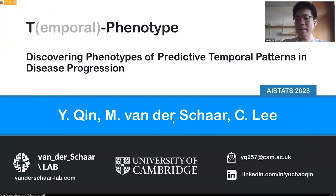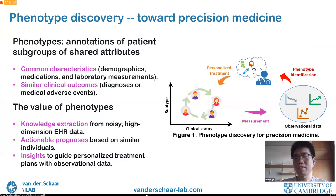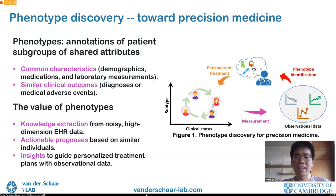Next I'll introduce our latest work on temporal phenotyping to discover predictive temporal patterns, accepted at AI Stats 2023. This is joint work with my supervisor Mihaela van der Schaar and former PhD student Chang-Hin Lee. A first question is: what are phenotypes and why should we care? Generally speaking, phenotypes are annotations or patient subgroups with shared attributes like common characteristics in age and biomarkers, or similar clinical outcomes in the future.